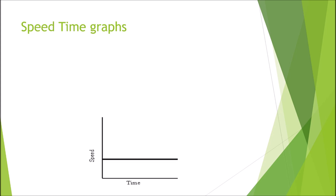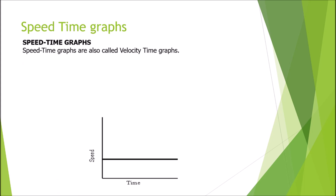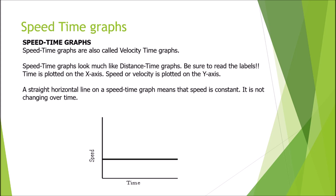Now we move on to the speed-time graph. Here, time is again the independent quantity plotted on the x-axis, and speed is the dependent quantity plotted on the y-axis. The speed-time graph is also called the velocity-time graph. It looks much like a distance-time graph, so be sure to read the labels. A straight horizontal line on a speed-time graph means the speed is constant — it is not changing over time.